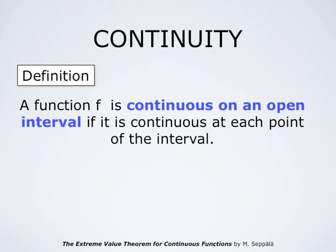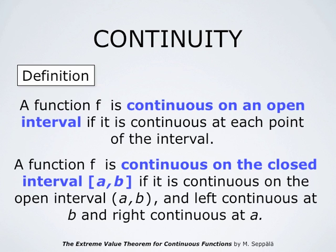A function f is continuous on an open interval if it is continuous at each point of that interval. A function f is continuous on the closed interval from a to b if it is continuous on the corresponding open interval from a to b, and left continuous at b and right continuous at a. This simply means that the right-hand limit of f(x) as x approaches a from the right must be f at a, and likewise the left-hand limit of f(x) as x approaches b from the left must be f at b.